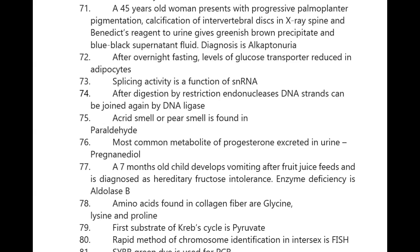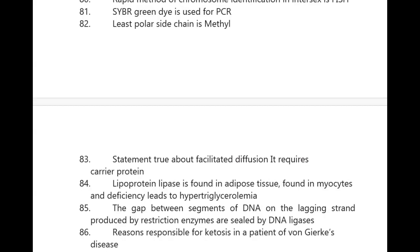The rapid method of chromosome identification in interphase is FISH — fluorescence in-situ hybridization. SYBR Green dye is used for PCR technique. The least polar side chain is methyl.